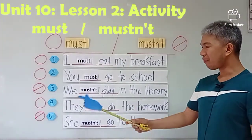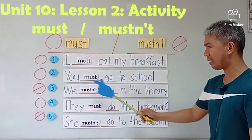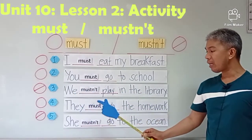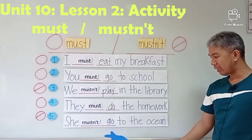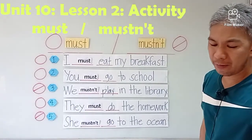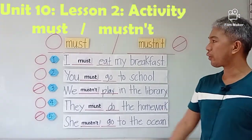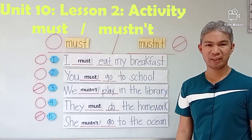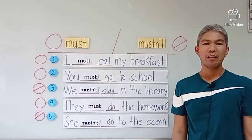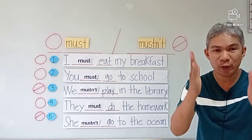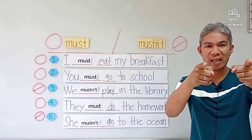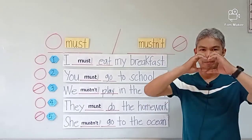Let's read together and review: I must eat my breakfast. You must go to school. We mustn't play in the library. They must do the homework. She mustn't go to the ocean. This is our activity. I hope you understand how to use must and mustn't. Always do your best — you must do your homework and you must stay safe. God bless and goodbye!